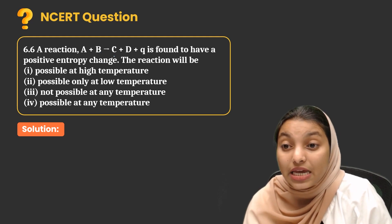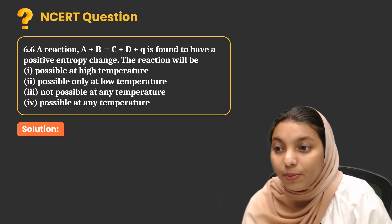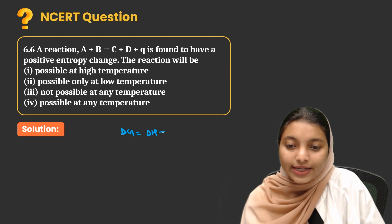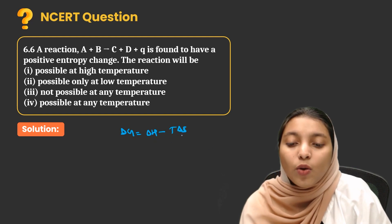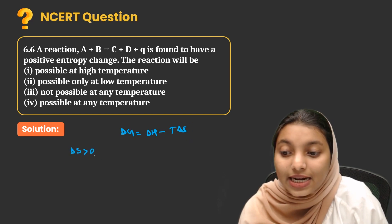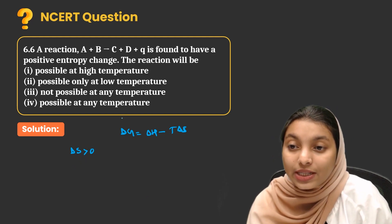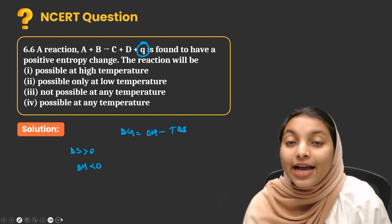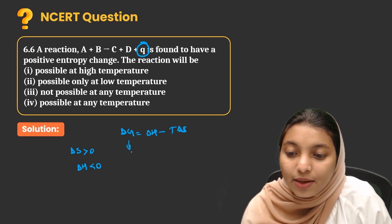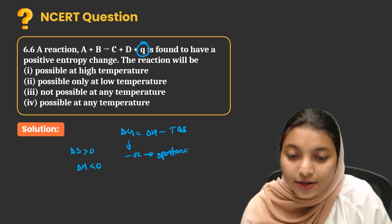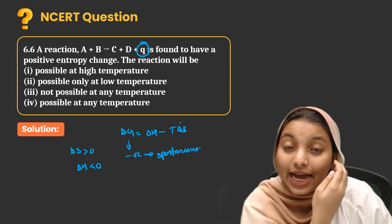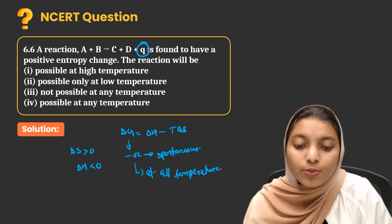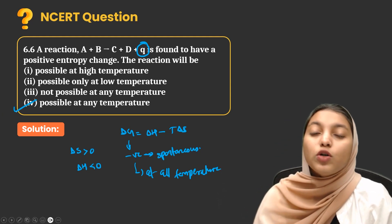A + B → C + D + Q is found to have a positive entropy change. The reaction will be — they are asking about spontaneity. Using delta G = delta H minus T·delta S: delta S is positive (greater than 0), and since heat Q appears on the product side, it is exothermic, so delta H is negative. With delta H negative and delta S positive, delta G will be negative at all temperatures. So the reaction will be possible at any temperature.